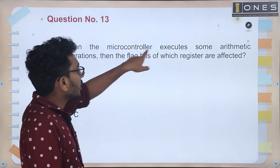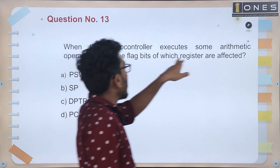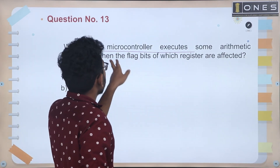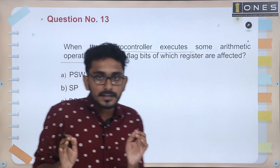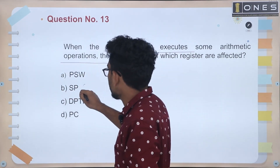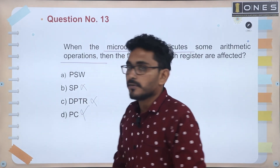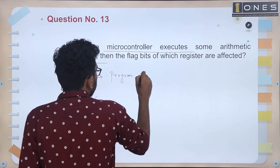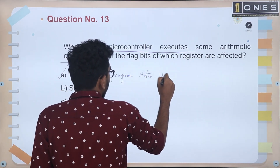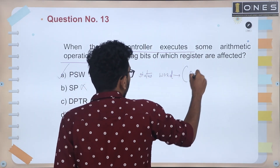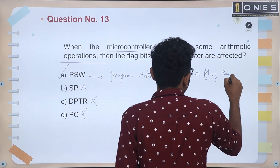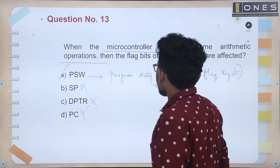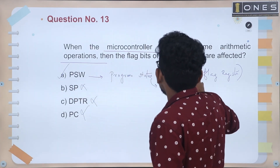Next question: when the microcontroller executes some arithmetic operations, the flag bits of which register are affected? The stack pointer, DPTR, and program counter are not flag registers. The PSW — Program Status Word — contains the flag bits that are affected during arithmetic operations.